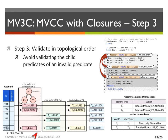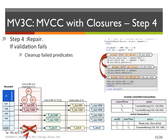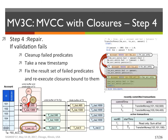Now, in the case that a transaction like TZ fails validation, MV3C repairs it in three steps. First, the failed predicates are cleaned up. The cleanup consists of removing all the versions created by the closure of the failed predicate, then cleaning up and removing all its child predicates. In our example, P3 does not have any child predicates, but it has a version bound to it, and we remove it in this step. Then, we need a new start timestamp for the transaction, because if we keep the same old start timestamp, the program reads the stale data again. The final step is to fix the results of the failed predicates and re-execute the closures bound to them. In our example, P3 reads the new version written by TY for the fee account, then executes the closure bound to it, which creates a new version for the fee account. Then it reaches validation, and this time it successfully commits.